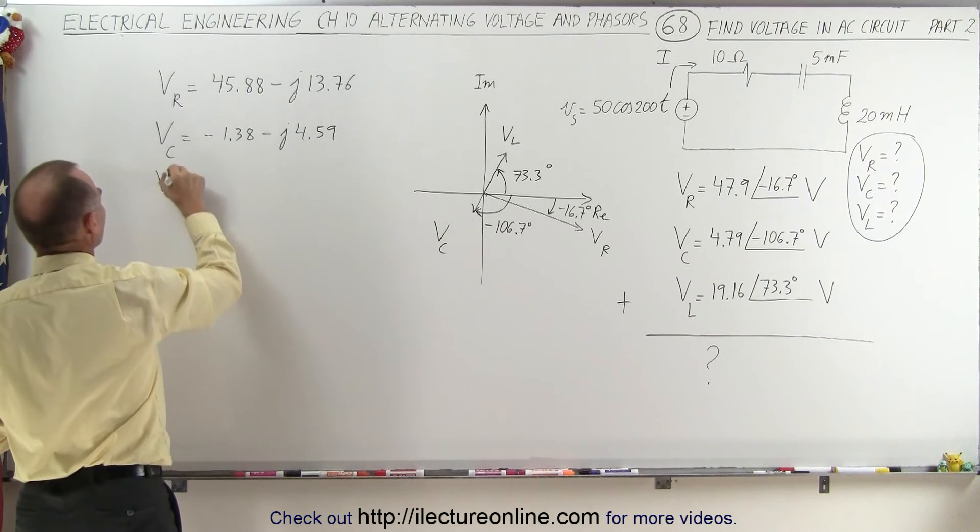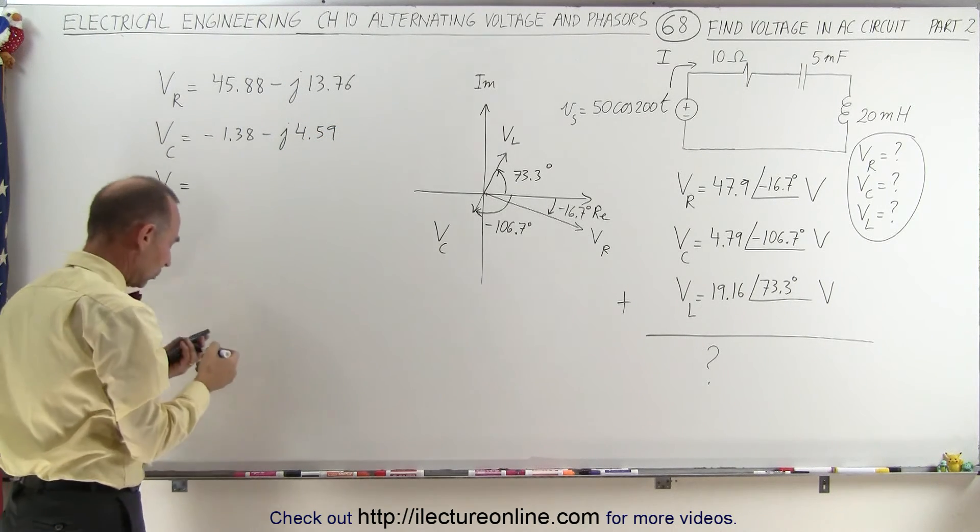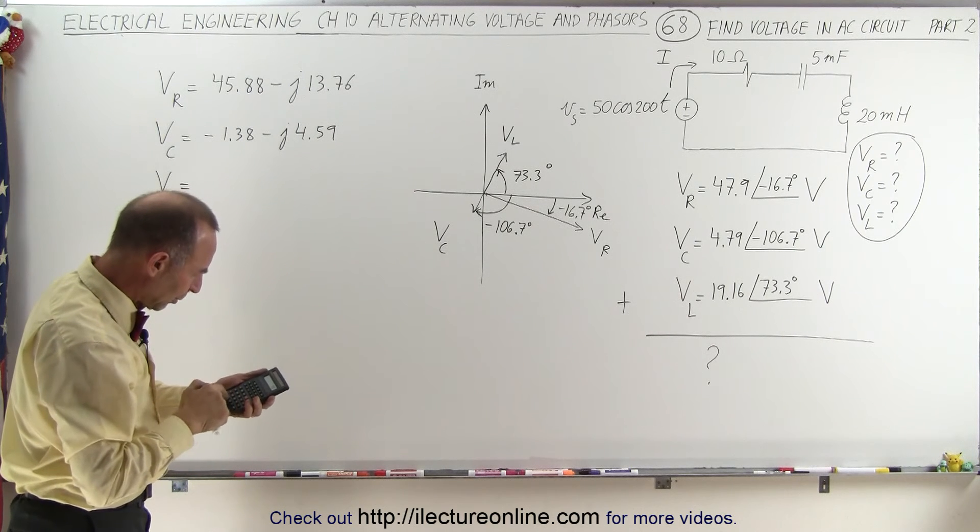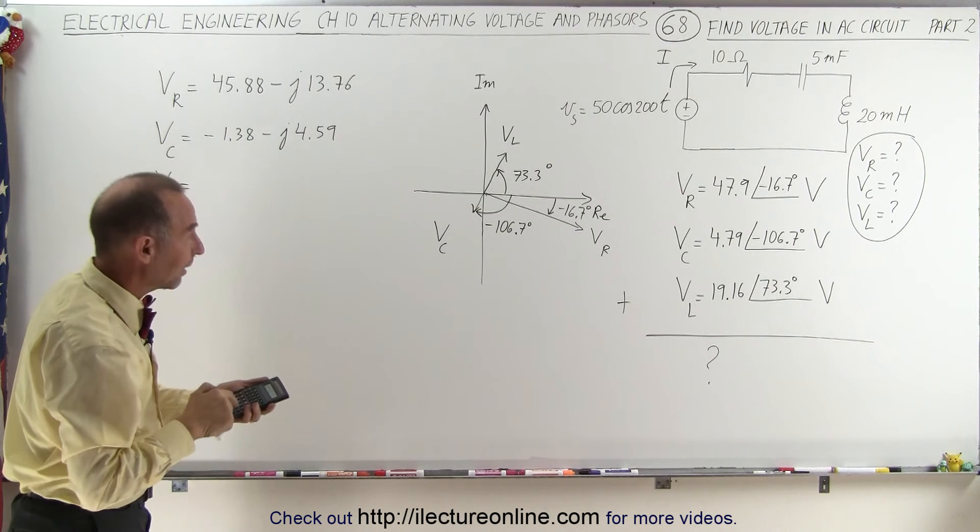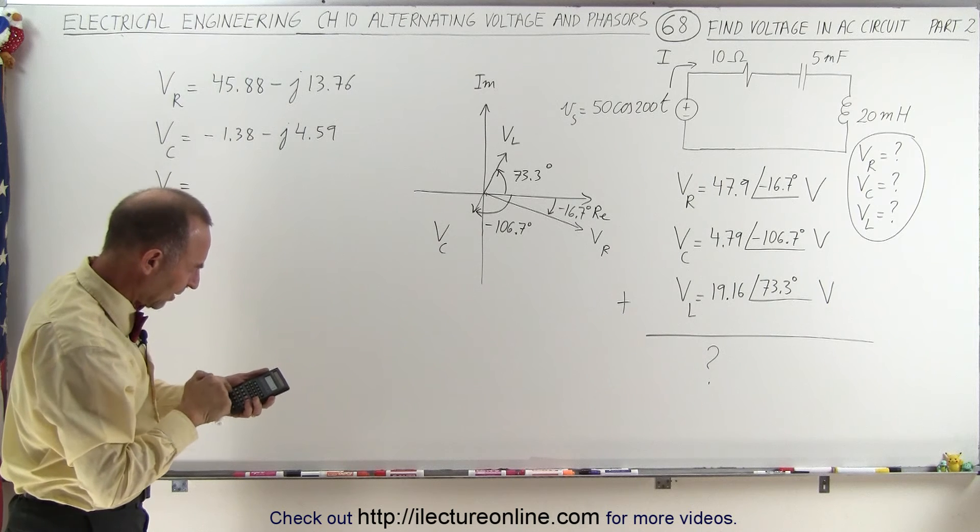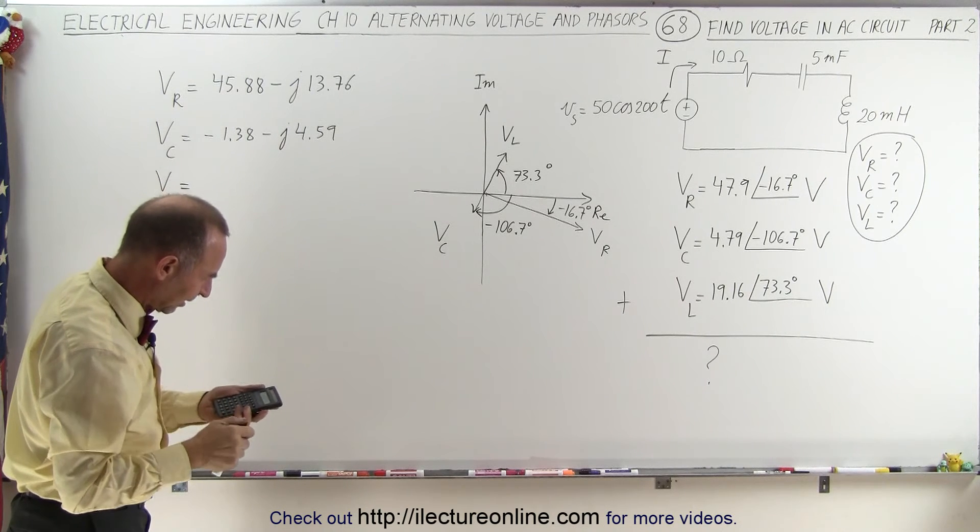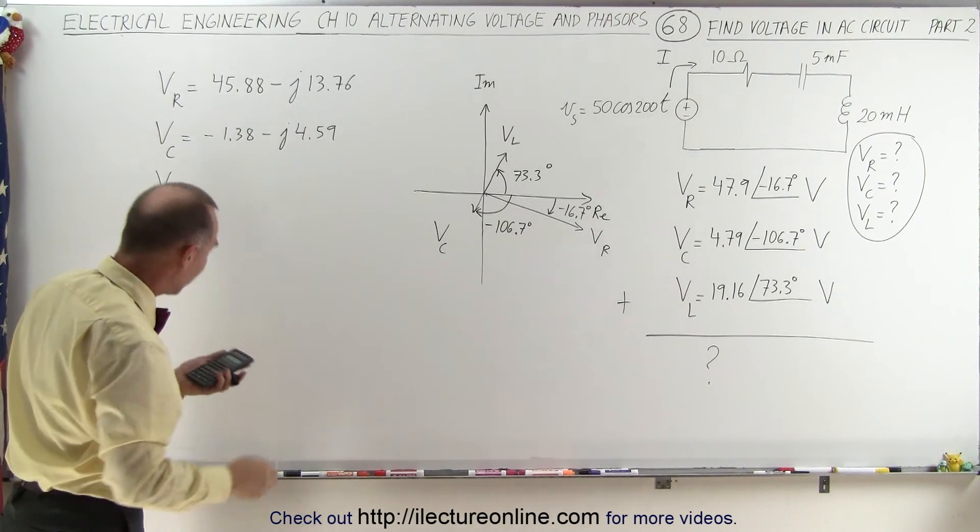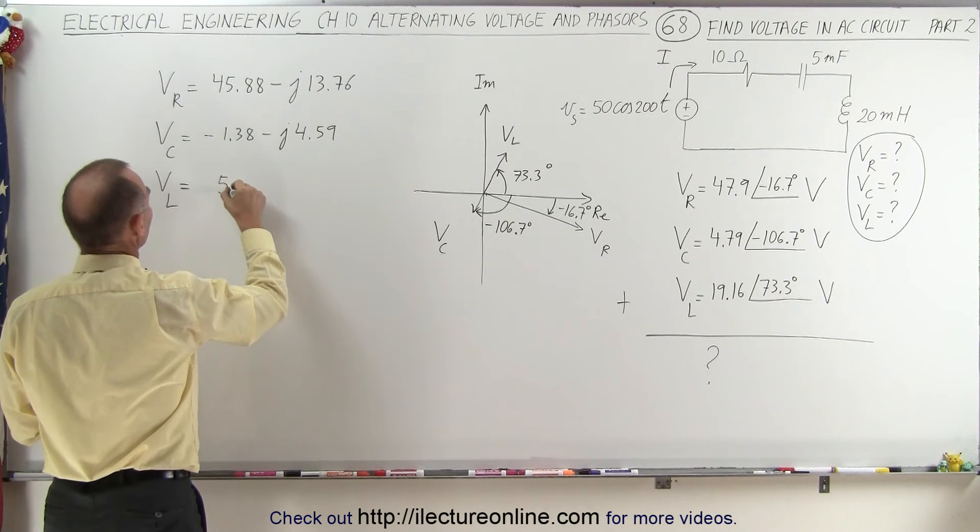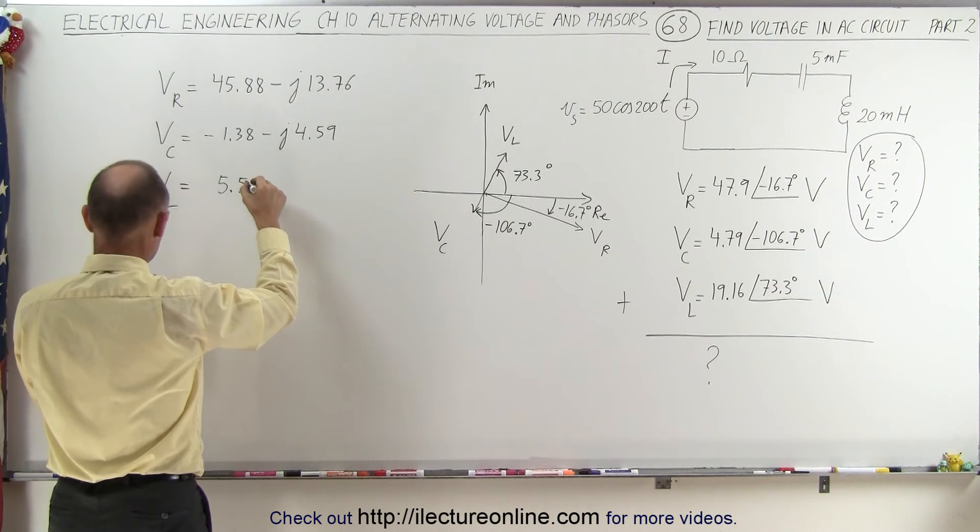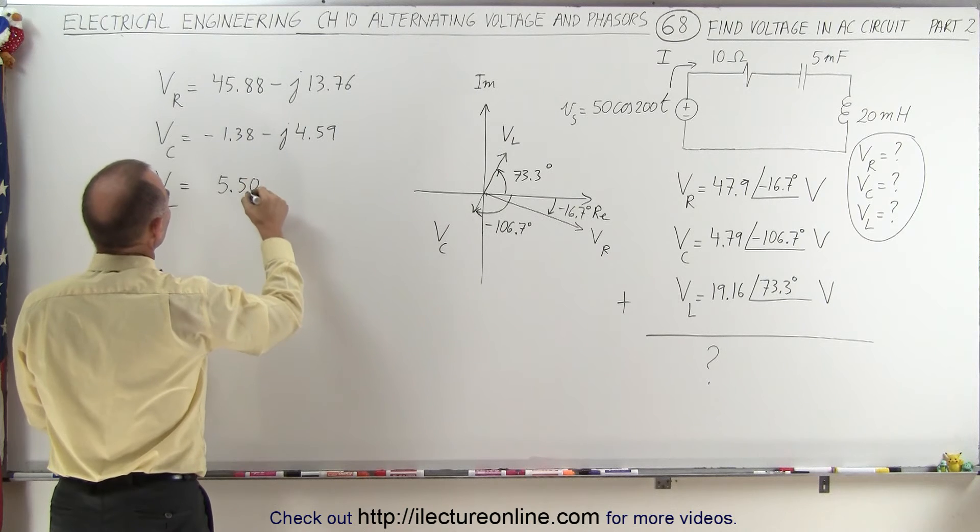And then finally the voltage across the inductor is going to be 73.3. Take the cosine of that and multiply it times 19.16. That gives us 5.51, let's write 5.50.